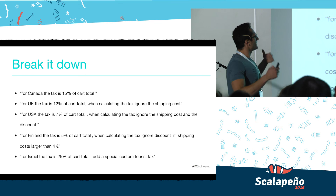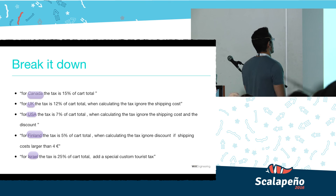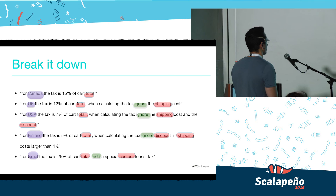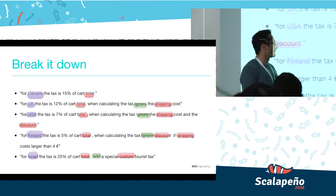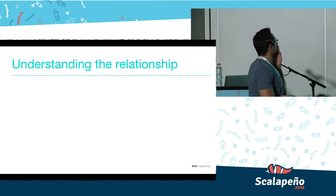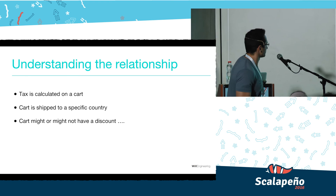Let's take the English requirements and extract our common vocabulary. We see a list of countries. We have a few fields related to the shopping cart: total, discount, and shipping. We have our verbs — we can either ignore or add a value to the tax calculation. We even have predicates: 'if' and 'larger than.' And we also have the actual tax amounts themselves.